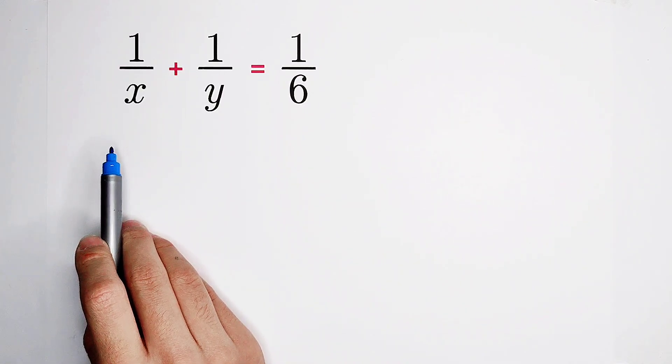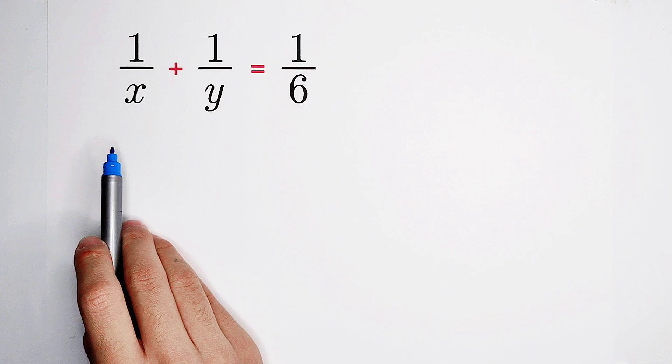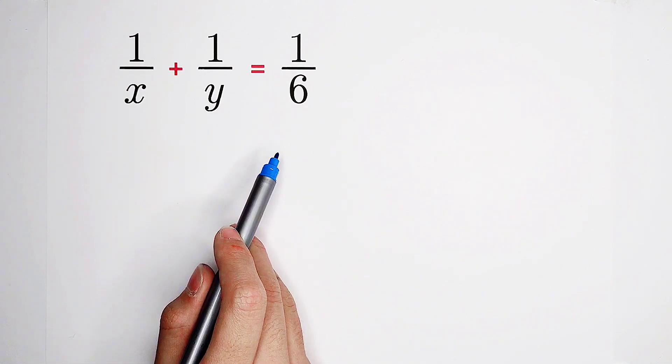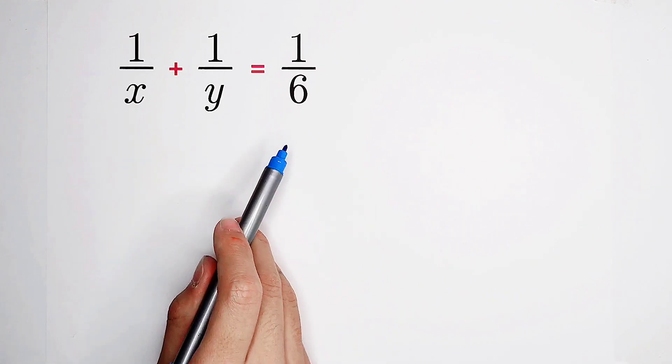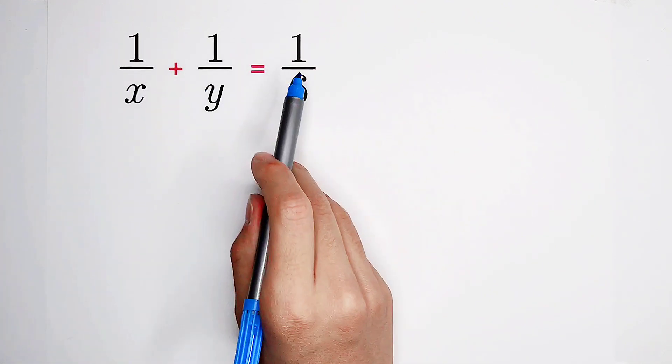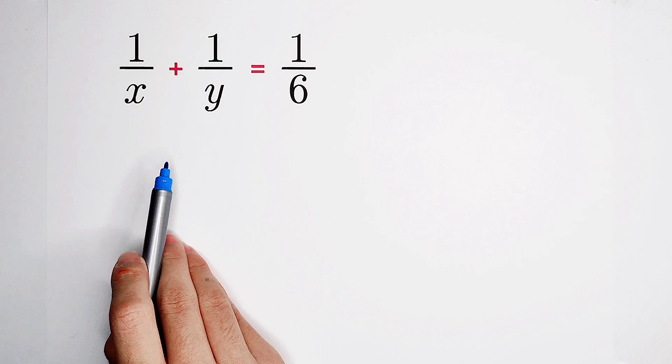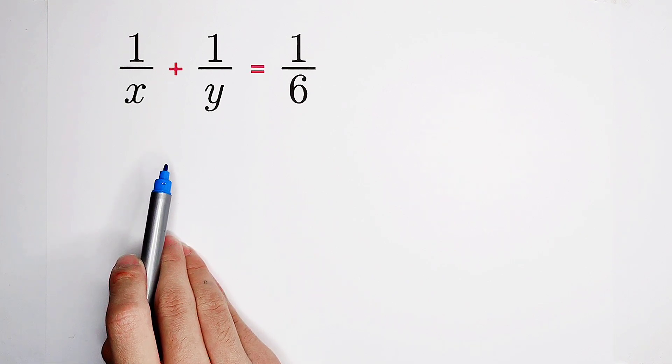From where shall we start? The left-hand side is a sum of two fractions, and the right-hand side is a single fraction, and all the fractions have the same numerator, 1. So the best choice is to simplify the left-hand side firstly, and then cross-multiply.